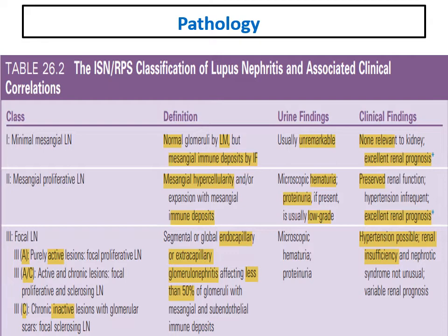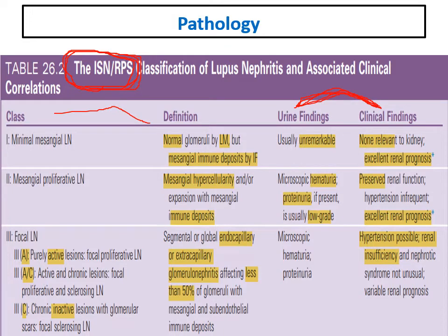For classification of lupus nephritis, we use the ISN/RPS — International Society of Nephrology and Renal Pathology Society — classification, present since 2003 with a revised criteria in 2018. This classification table is very important because it contains the pathology, the definition of each class, and the clinical presentation. It helps in the clinical-pathological correlation for each class — what we will find in urine and what are the clinical findings.